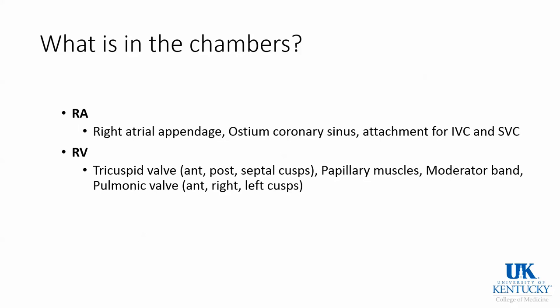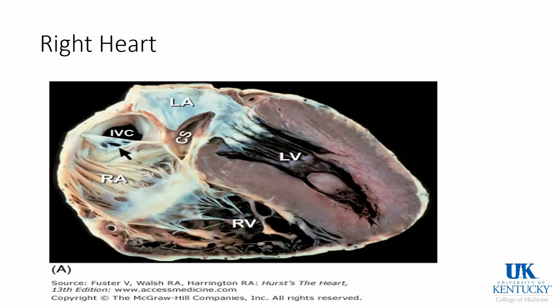Looking at the chambers: the right atrium has a right atrial appendage, the ostium for the coronary sinus, and the attachment points for the IVC and SVC. The right ventricle has a tricuspid valve to enter it and a pulmonary valve on the other side. There are papillary muscles, and special to the RV is a moderator band which is not seen in the left ventricle.